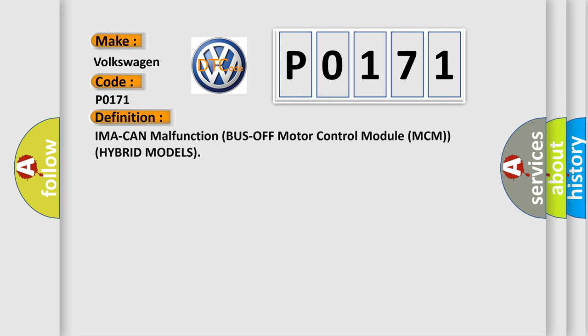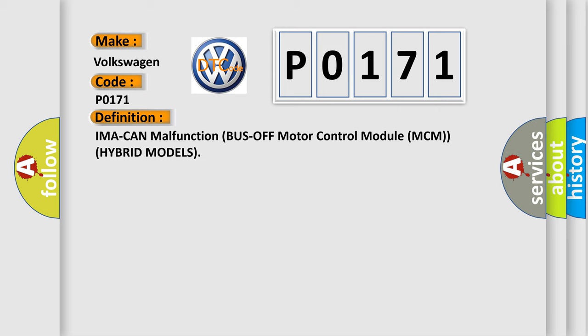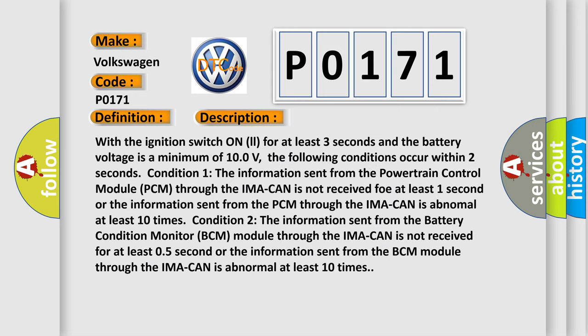The basic definition is: IMA CAN malfunction bus-off, motor control module (MCM), hybrid models. With the ignition switch on for at least three seconds and the battery voltage at a minimum of 100 volts, the following conditions occur within two seconds. Condition one: the information sent from the powertrain control module (PCM) through the IMA CAN is not received for at least one second, or the information sent from the PCM through the IMA CAN is abnormal at least 10 times.